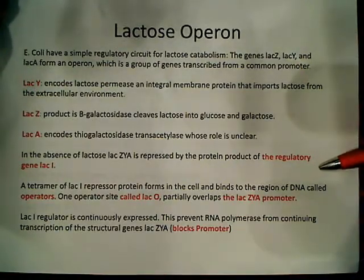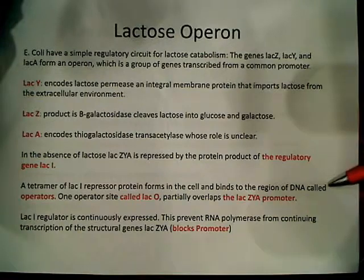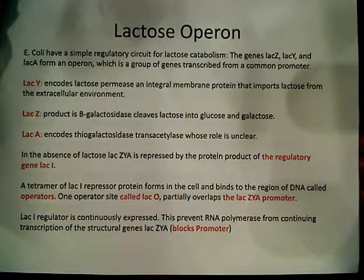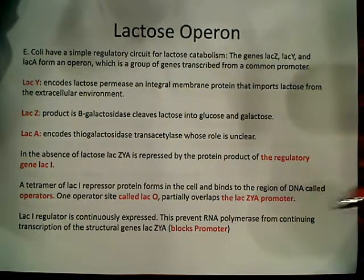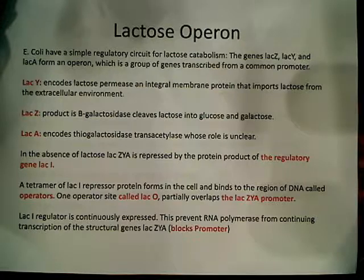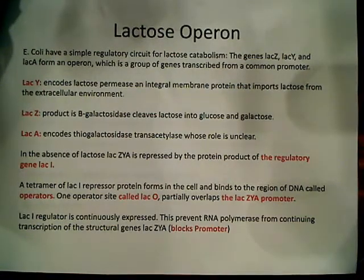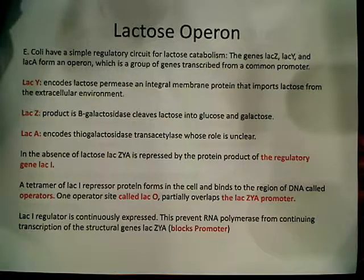In a little more detail, a tetramer of lacI repressor protein forms in the cell and binds to the region of DNA called the operator — we call that lacO — and it partially overlaps with the lacZYA promoter. This regulatory or repressor protein is continuously expressed at all times. E. coli has a preferred source of energy, and that preferred source is glucose. So if glucose is present, this lac operon is not being transcribed.